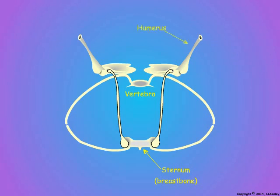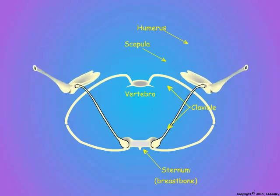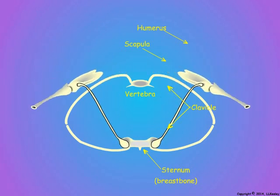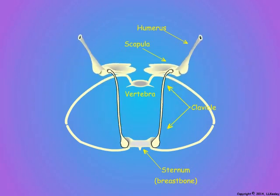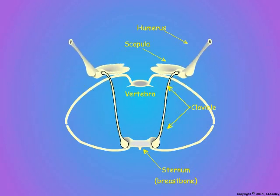Unlike birds, the humerus of the wing articulates on the scapula, and the scapula of bats is attached to only the clavicle. The clavicle is articulated to the sternum and rotates laterally during the downstroke, pulling the scapula about 30 degrees laterally and ventrally around the ribcage. This rotation of the scapula adds to the arc of the wing beat.